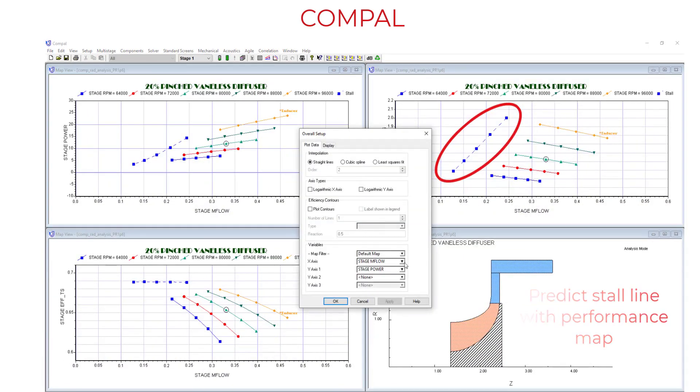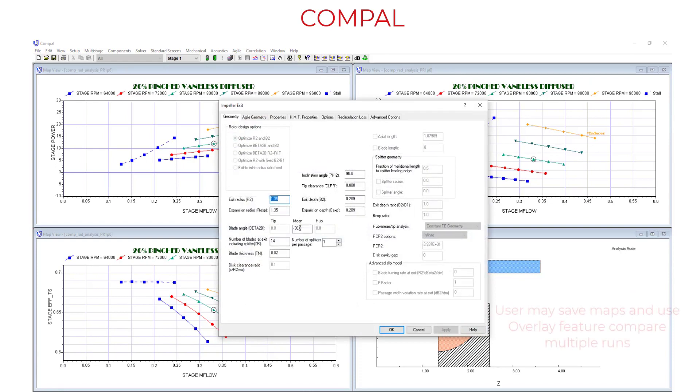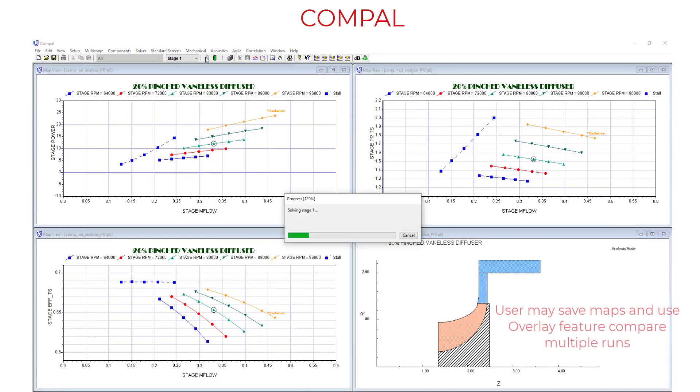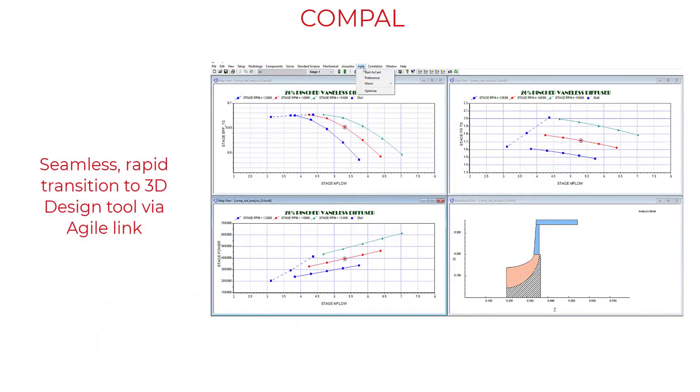We have a built-in prediction for stall, as well as the ability to plot any of the variables you see here on an XY plot. We can also look at multiple designs and have them overlay.